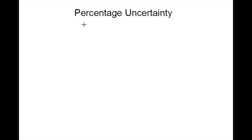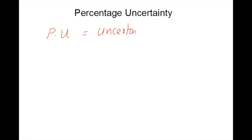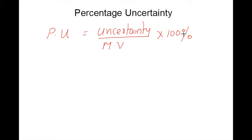Today we will discuss percentage uncertainty. The equation we use is: percentage uncertainty equals the uncertainty in the measured value divided by the measured value, times 100%. This is the equation generally used to find the percentage uncertainty of a measured value.